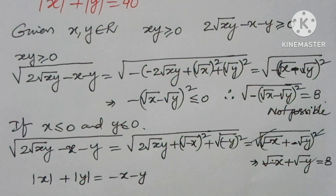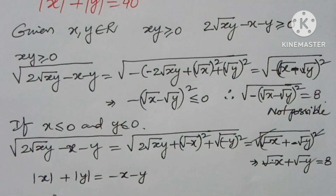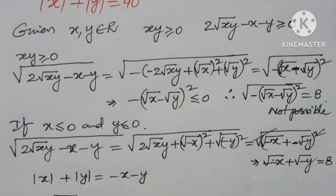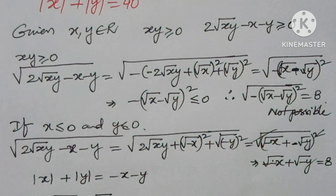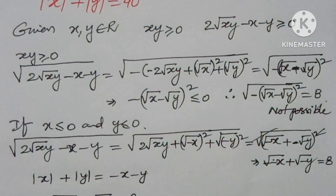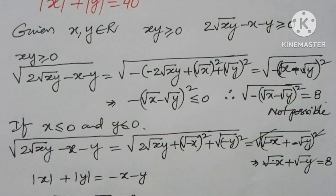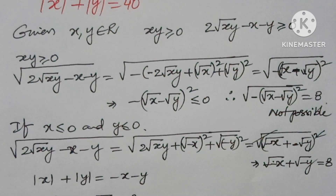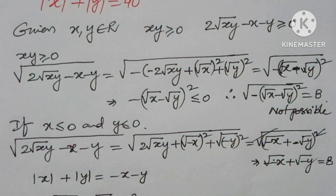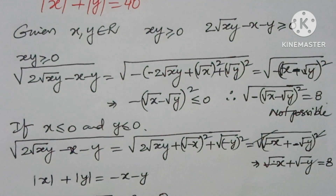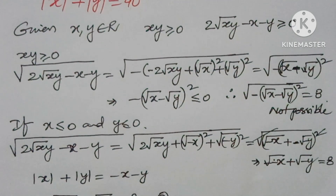So the given conditions become: √(−x) + √(−y) = 8 — call this equation (3) — and (−x) + (−y) = 40 — call this equation (4).